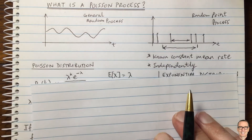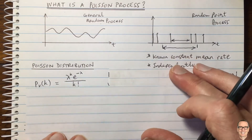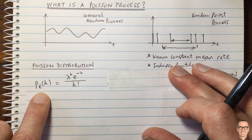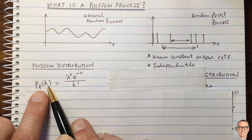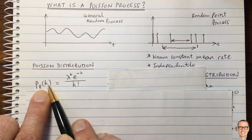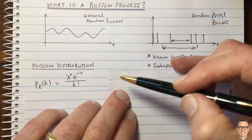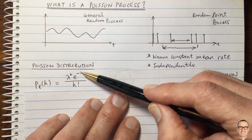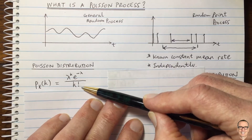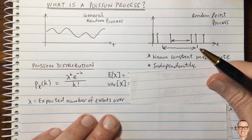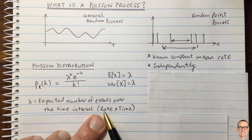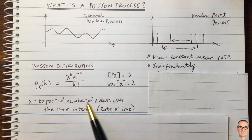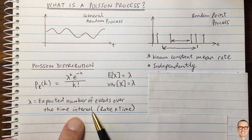Here's the Poisson distribution. We have the probability for the Poisson process random variable x — this is the probability that k events happen in the time period of interest. That probability equals lambda to the power k, times e to the minus lambda, divided by k factorial. Here, lambda is the expected number of events over the time interval of interest. Sometimes we can write this as the rate times the time, if we know what the rate is. In general, lambda is the expected number of events over the time interval you are choosing to look at.